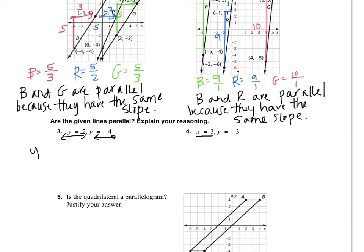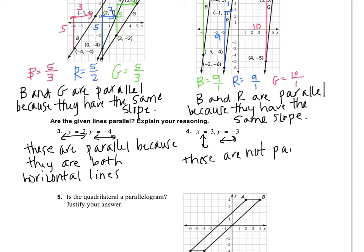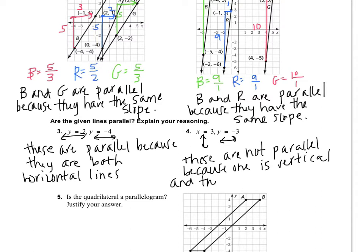These are parallel because they are both horizontal lines. Over here in number four, X-equals is a vertical line and Y-equals is a horizontal line. So the answer is these are not parallel because one is vertical and the other is horizontal.